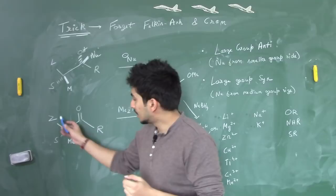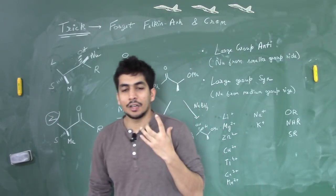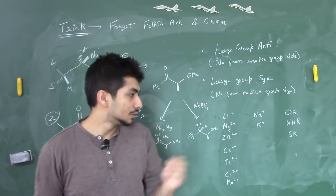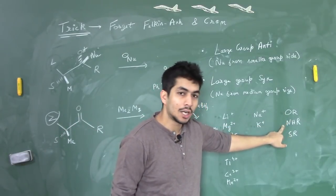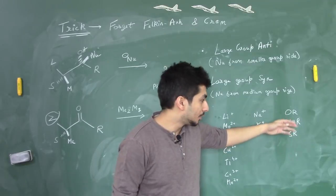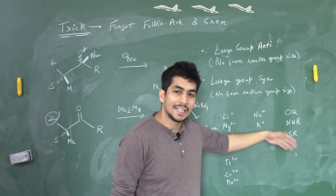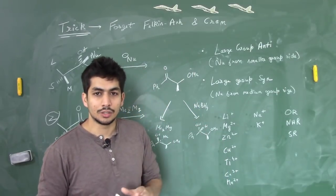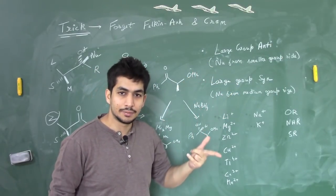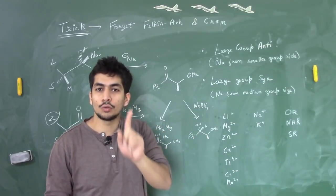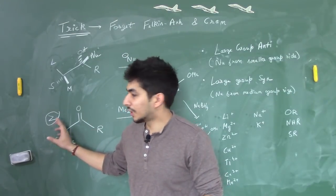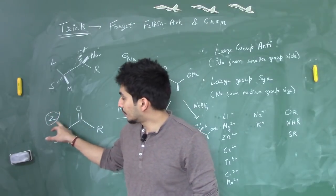The Z group is any functional group that has a lone pair of electrons capable of forming a chelate with the metal. Examples include methoxy (OMe), amine groups (NHR), and sulfur groups (SR) — all have lone pairs. In the case of chelation, whatever result you get in the general case, you simply reverse it. You consider whether the Z group is syn or anti to your ketone instead of the large group.